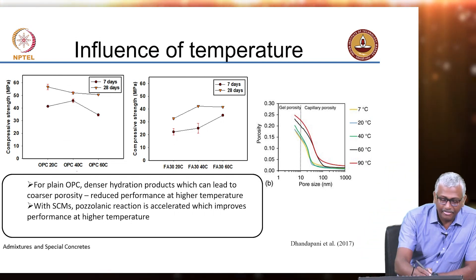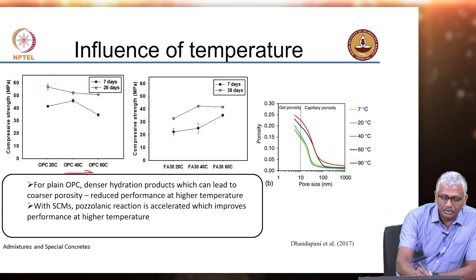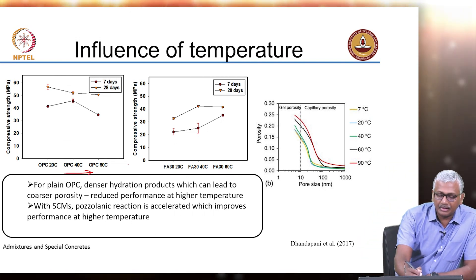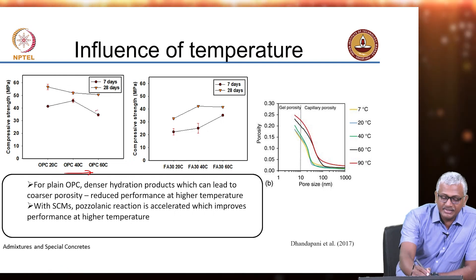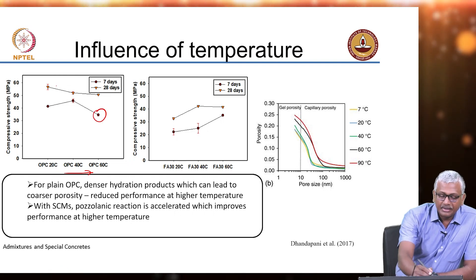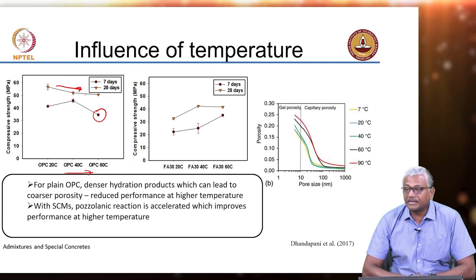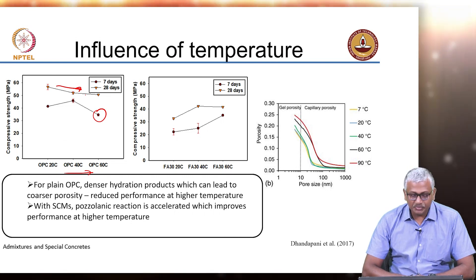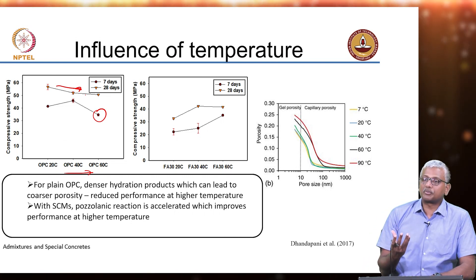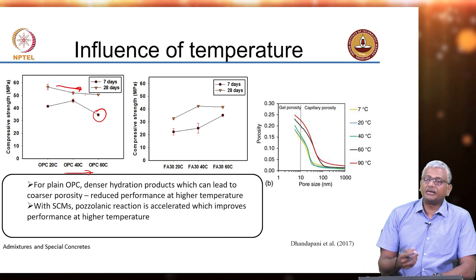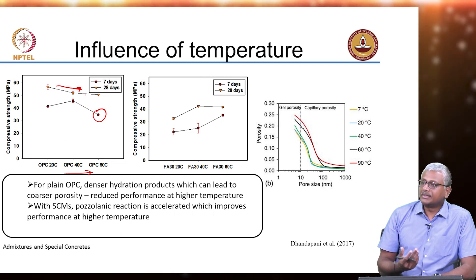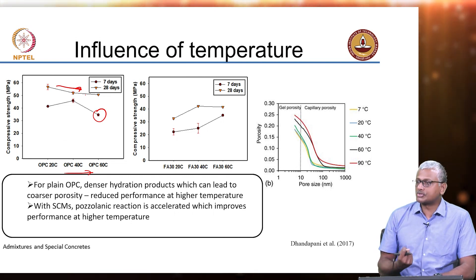As you cure concrete at higher and higher temperatures, you see a strength drop at very high curing temperatures. This is because the pore structure produced when you cure at high temperatures is generally much coarser.